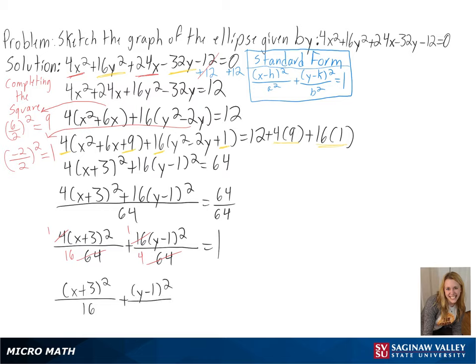To start plotting our graph, we need to find the center of the ellipse. We can see here that our h is equal to negative 3, and our k is equal to 1, so our center of our ellipse will be equal to negative 3 comma 1.